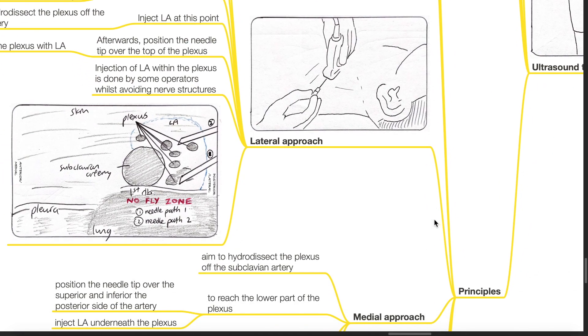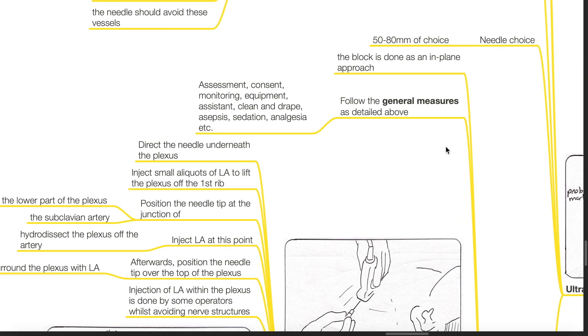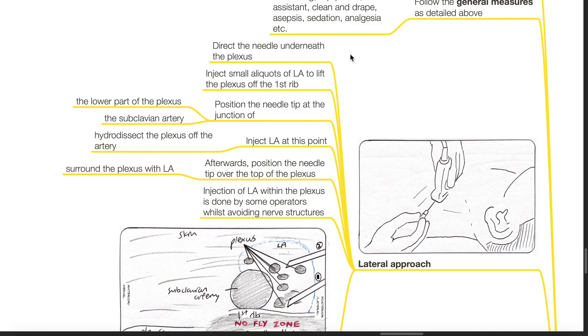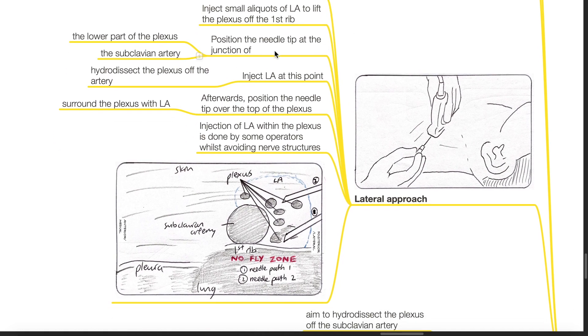Principles of the ultrasound technique. The block is done as an in-plane approach. Follow the general measures as detailed. Lateral approach: direct the needle underneath the plexus. Inject small aliquots of local anesthetic to lift the plexus off the first rib. Position the needle tip at the junction of the lower part of the plexus and the subclavian artery.